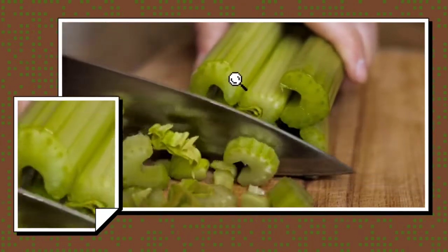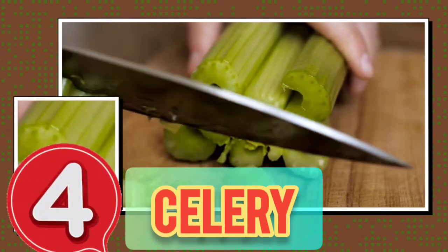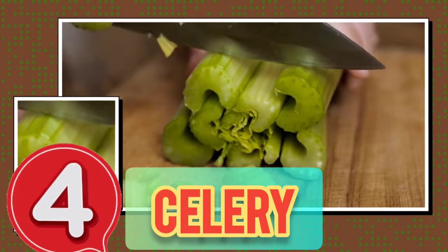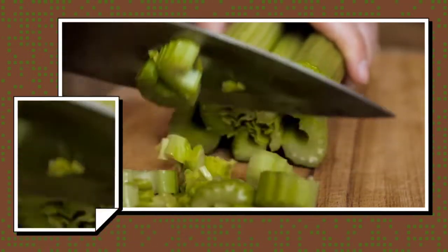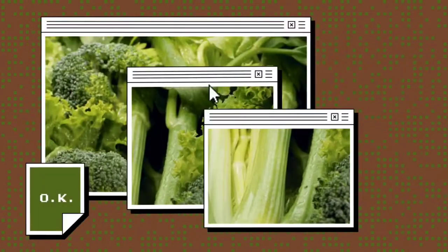Number four on our list is celery. I have to tell you right now, celery is almost forgotten about by a lot of people out there. I need to stress how important it is. It contains something that I've said many times already, and that's antioxidants, including flavonoids.